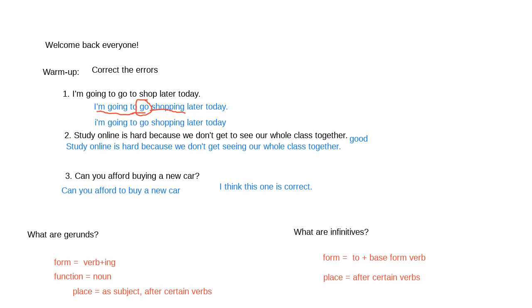The correct sentence is: 'I'm going to go shopping later today.' We do not need 'to' after 'go' — we never say 'to shopping.' We also don't want to use an infinitive 'to shop' because we have this as one of our common expressions. These activities — like shopping, skiing, jogging — are ones we use in the gerund form.